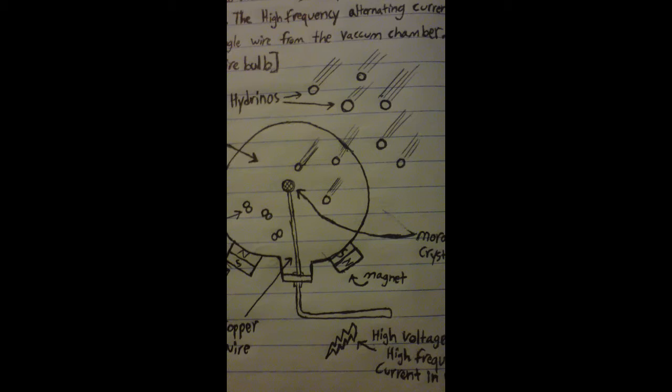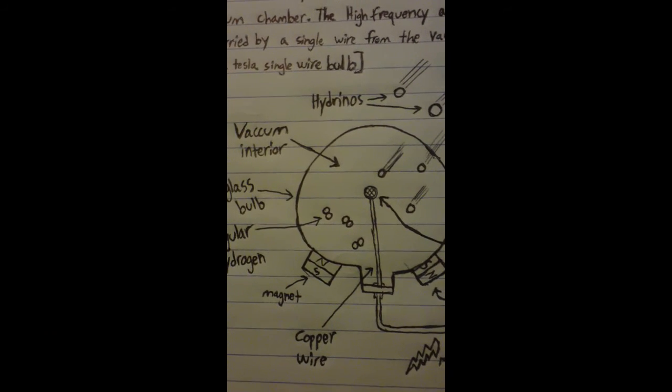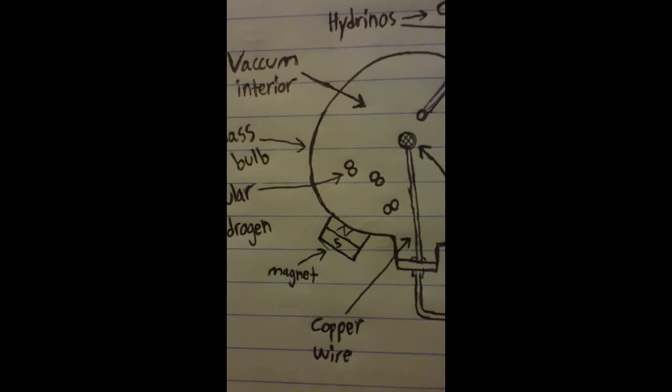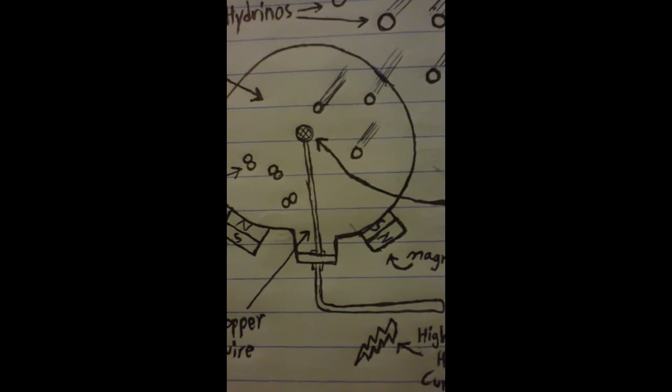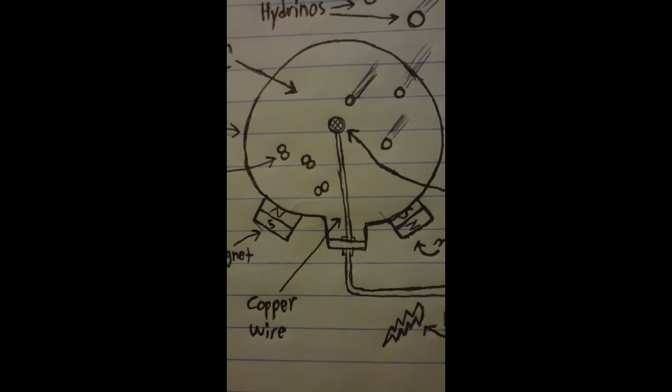As hydrinos enter and interact with the crystal, they are slowed down by the magnetic field created by the two magnets on the outside of the vacuum vessel.